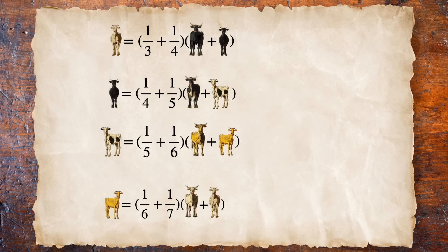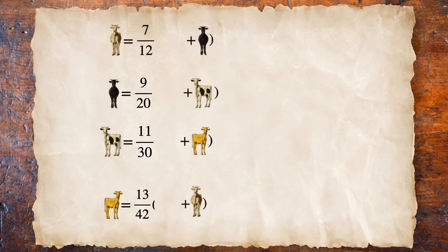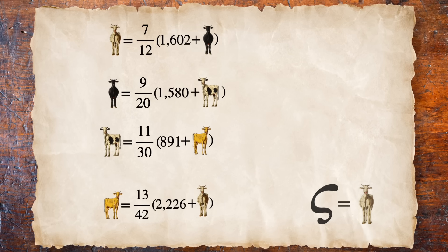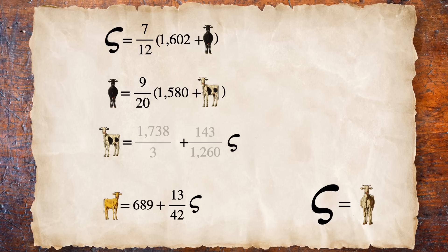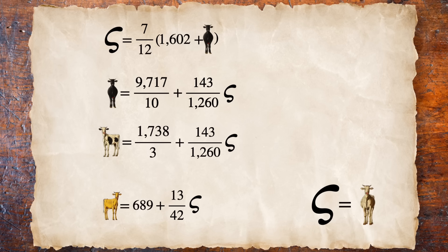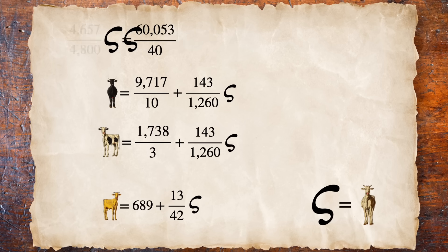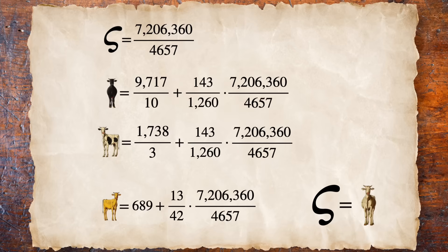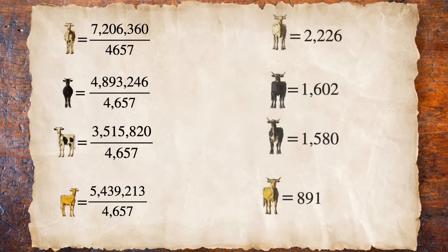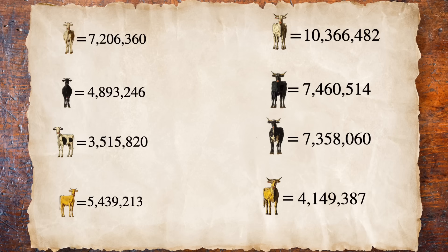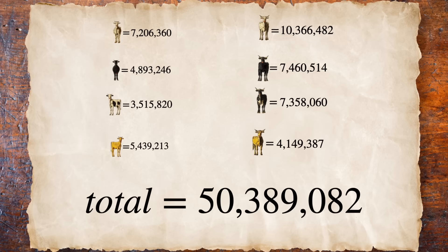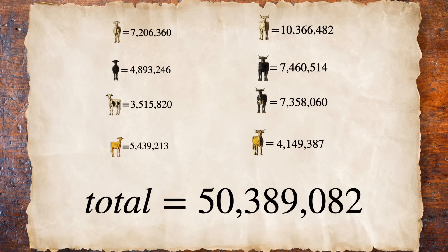Okay, this is kind of more of the same for counting the female cows. Once more, we can assign the unknown to one type of cow and substitute our way through to a solution. Then we multiply up the size of the entire herd to get rid of our fractions. So the total comes out to 50,389,082 cattle.